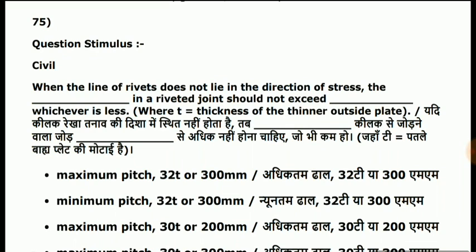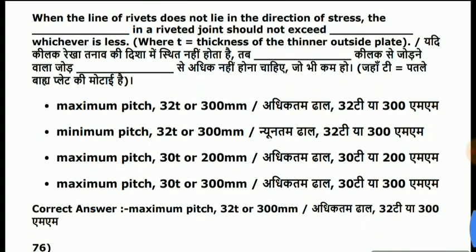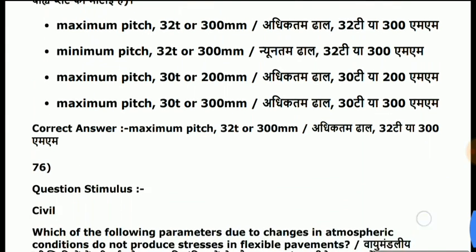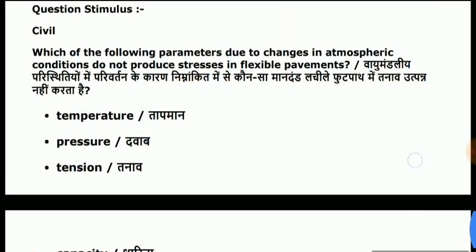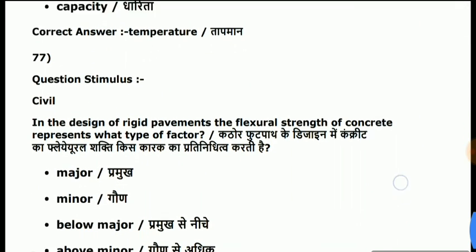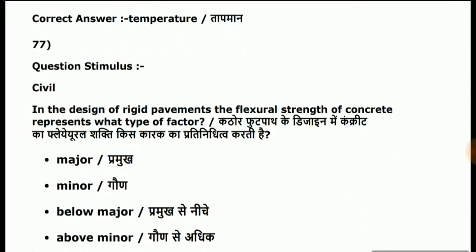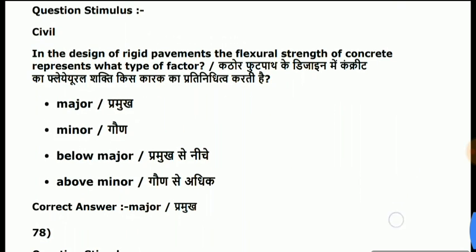Question 75: when the line of rivets does not lie in the direction of stress, the maximum pitch is 32t or 300 mm. Question 76: which parameter due to changes in atmospheric conditions does not produce stresses in flexible pavement? Answer is temperature. Question 77: in the design of rigid pavement, the flexural strength of concrete represents what type of factor? Answer is major factor.